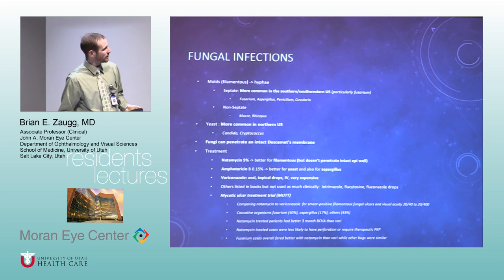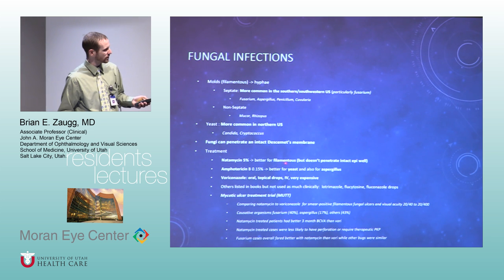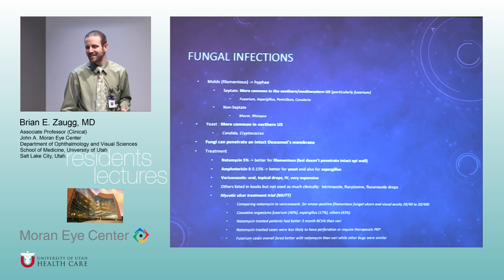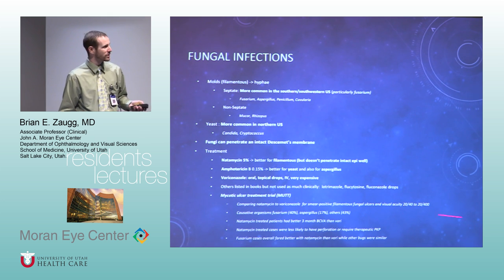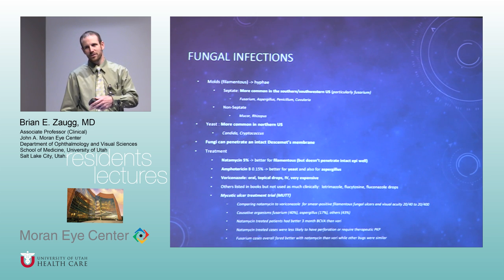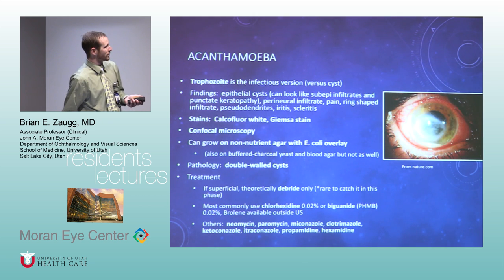Fungal infections are not as common here in the US. Natamycin works really well for filamentous fungus, and voriconazole doesn't add much benefit in those situations. Aspergillus is most common in Canada. I have a fusarium ulcer case that took about four months to heal the epithelium — she had HSV and developed a fungal ulcer three weeks into it. We cultured it and fusarium grew.